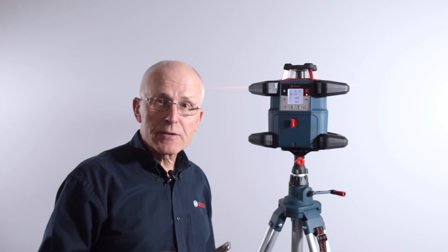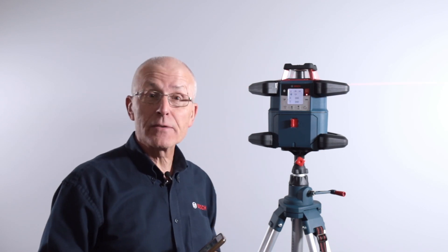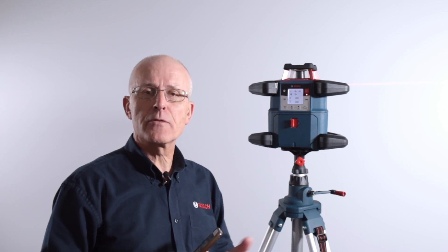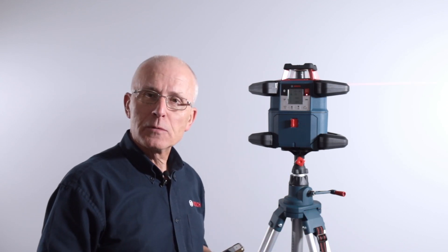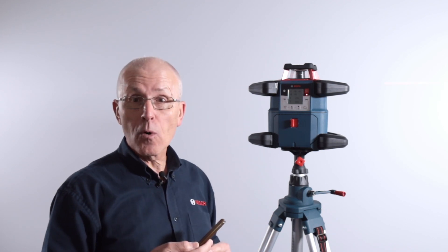The GRL 600 CHV is already connected via Bluetooth when delivered, with both the receiver and remote control. It's also possible to connect via Bluetooth to a smartphone or tablet.